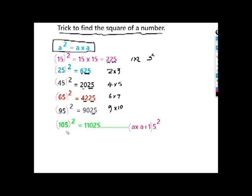3 digits and beyond. For example, 105 squared: 5 squared is 25, 10 times 11 is 110, so 11025.